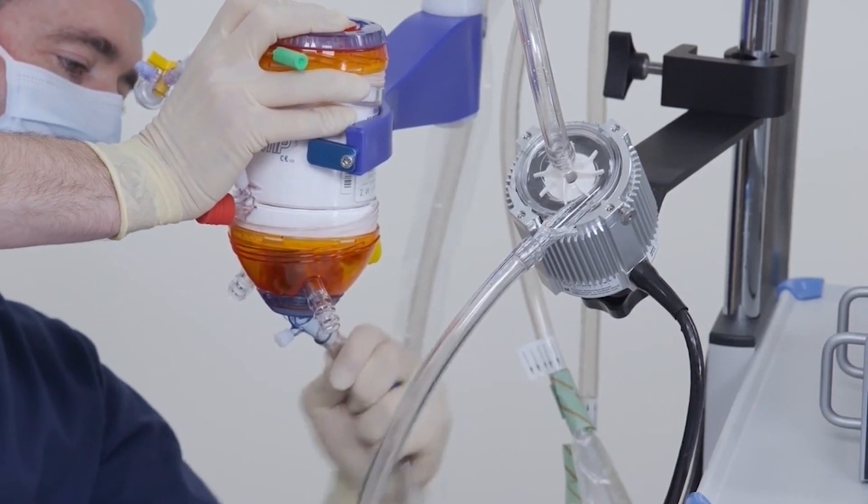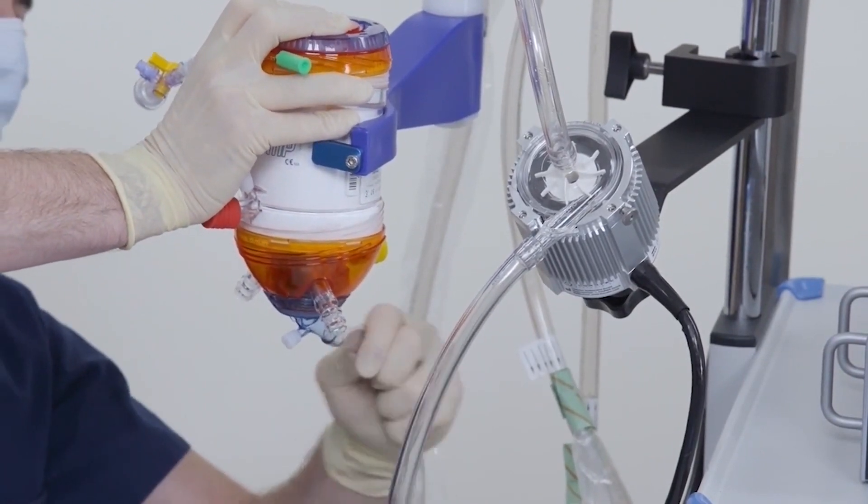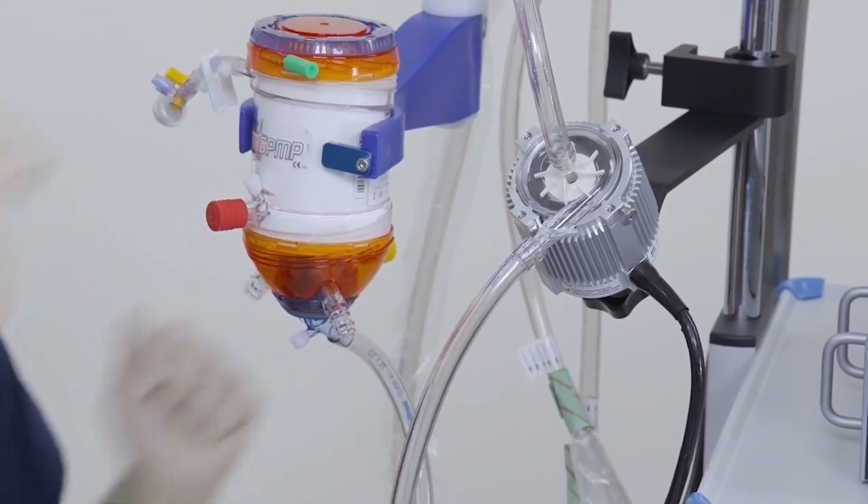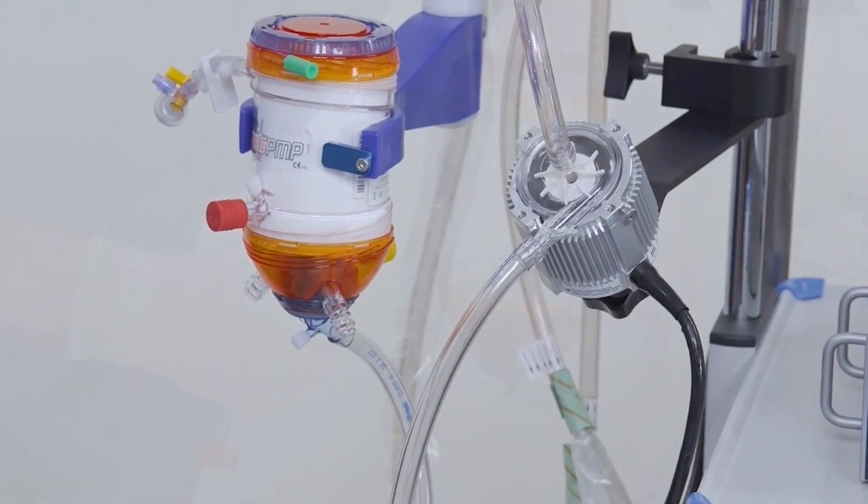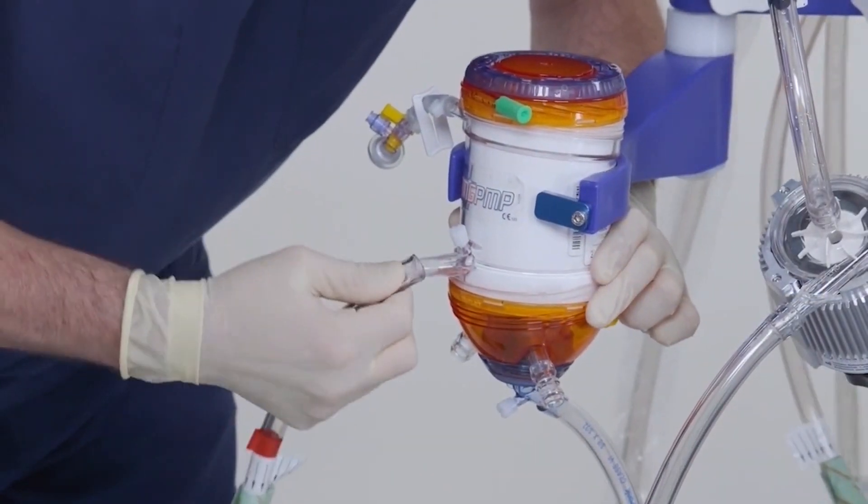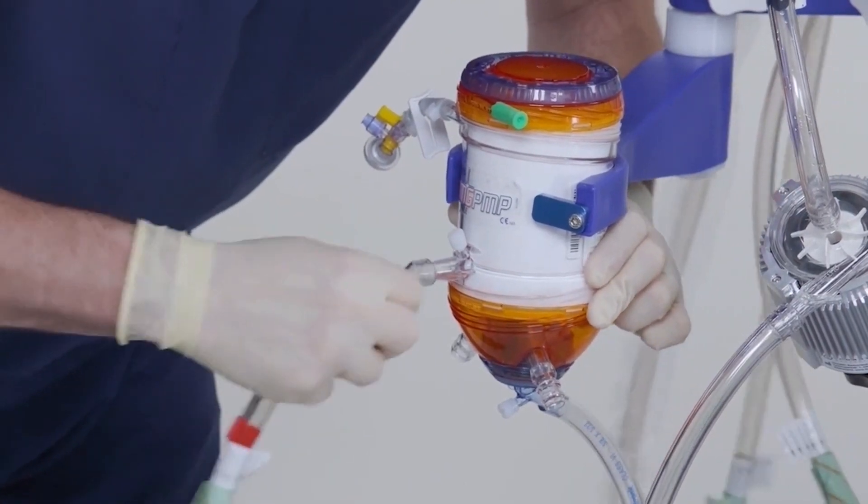Next, connect the other end of the tubing to the blood inlet port of the oxygenator and attach the arterial line of the tubing pack to the blood outlet port of the oxygenator.